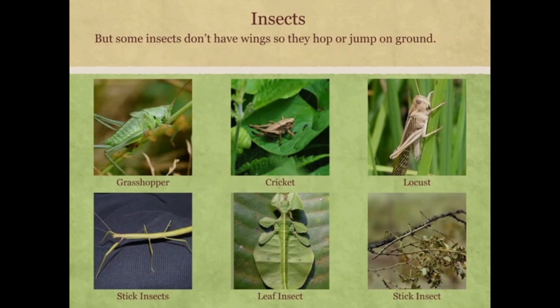But some insects don't have wings, so they hop or jump on the ground. Examples include grasshopper, cricket, locust, stick insect and leaf insect.